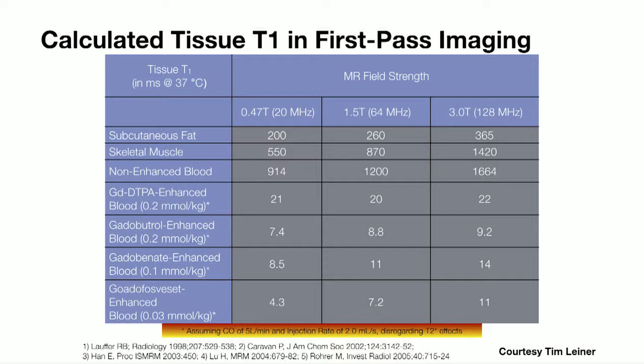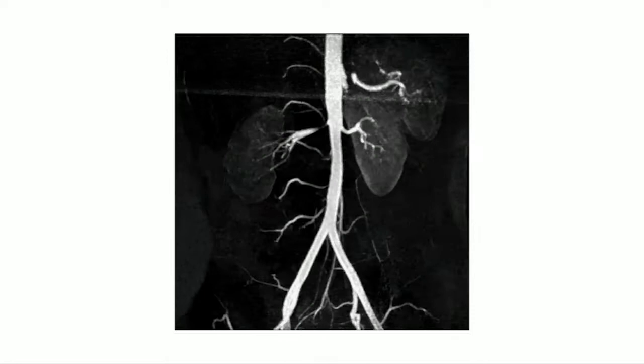If we give a bolus of contrast we can drive our T1 way down, bring it below that of skeletal muscle and fat, and hopefully get good contrast — ending up with a nice 3D contrast-enhanced MRA.